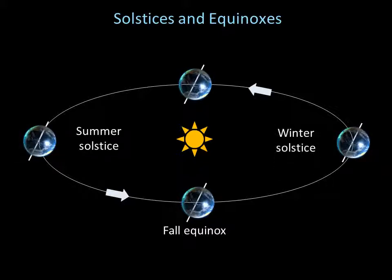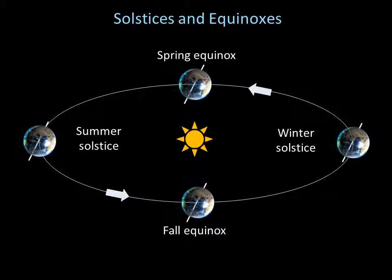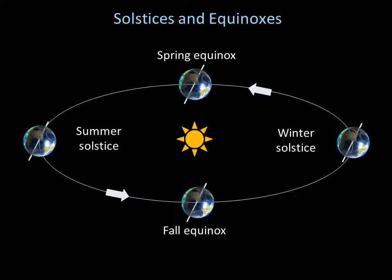The winter solstice occurs around December 21st, and it's the moment when the northern hemisphere receives the least direct sunlight. Finally, the spring equinox occurs around March 21st. It's the moment when the northern hemisphere goes from being tipped away from the sun to being tipped towards the sun.